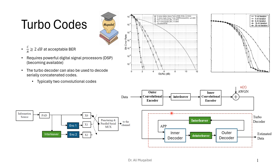The turbo code has an encoder and a decoder. We're just giving a simple idea about turbo codes. So turbo codes: if this is the source of information, we're going to pad that just to complete a block. Then we have one direct information line — it's a systematic code because the information appears as one of the bits. Then we have one convolutional encoder and another convolutional encoder, but before the second one we have an interleaver, which also helps with burst errors.